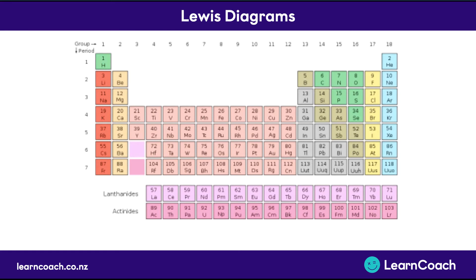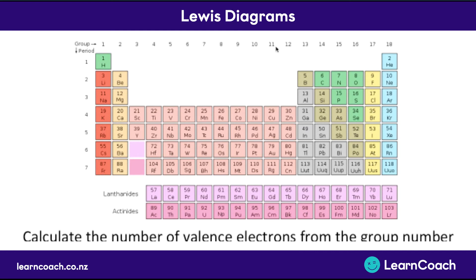We can do this by looking at the periodic table, and you'll get a copy of this in your exam. You do it by looking at the group number — the group number at the top will tell us how many valence electrons there are. All atoms in group one will have one valence electron; all in group two will have two valence electrons. For your exams, you don't need to care about groups 3 to 12. We start looking again at 13, and here we can just ignore the 10 out front: so group 13 has three valence electrons, 14 has four, 15 has five. For example, selenium, number 34, is in group 16, so you can see straight away that it has six valence electrons. This is how you get the number of dots for your atoms.